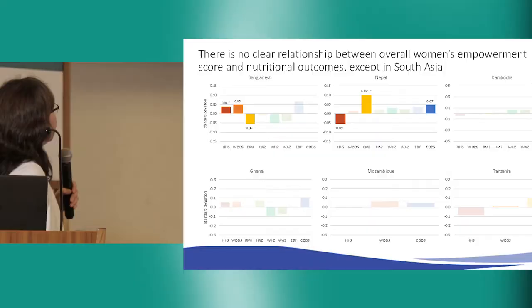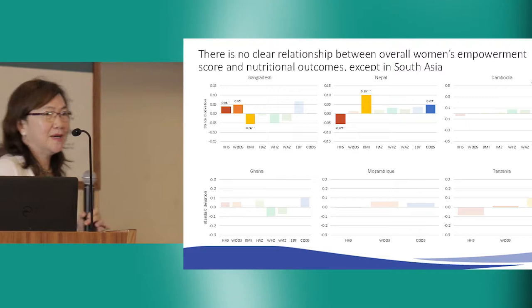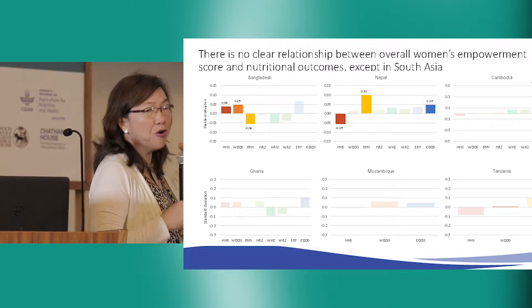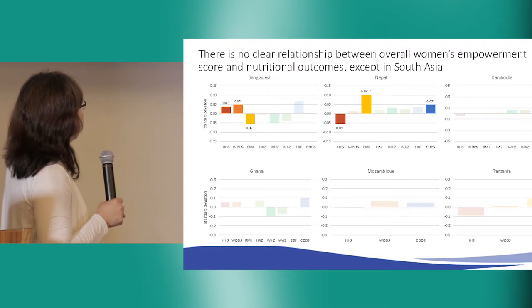If you're a policy maker or programmer and want to affect things on the ground, it's easier to work at the indicator level because those are things your program can directly affect. This graph is intentionally blurry because there is no clear relationship between the overall women's empowerment score based on the five domains, except in South Asia. In Ghana, Mozambique, and Tanzania, the results are not statistically significant.